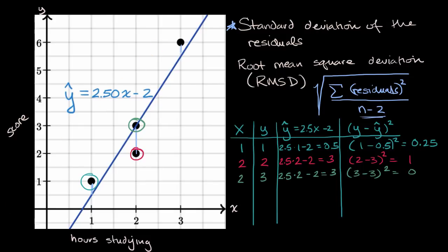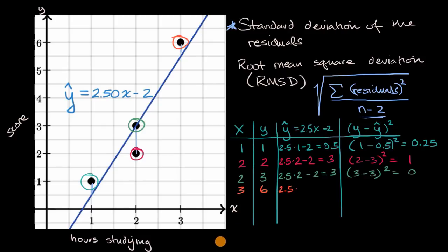Last but not least, when x is three, this person studied three hours and got a six on the test, so y equals six. Our estimate from the regression line is 2.5 times three minus two, which equals 5.5. So our residual squared is (6 minus 5.5)², which is 0.5 squared, which equals 0.25.